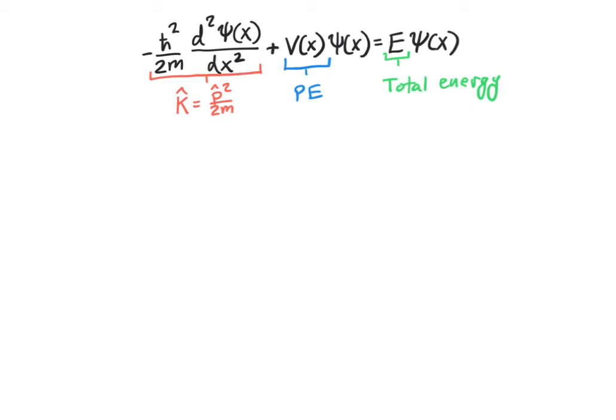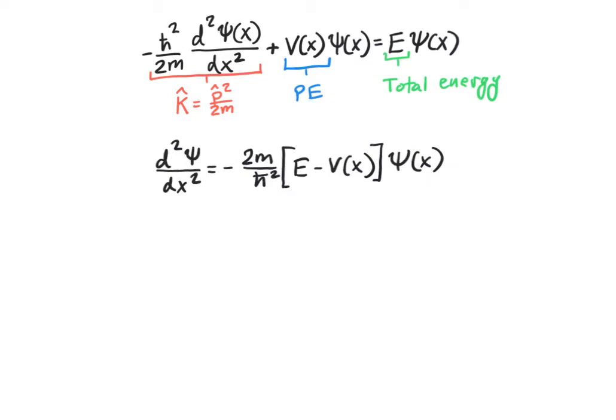Recall that this is an eigenvalue equation. The solutions to this equation are functions such that the left-hand side — basically a combination of operators acting on our function — is simply equal to a number times the original function. The eigenvalue, the number on the right, simply represents the total energy of our state. For qualitative analysis, it's easier to rewrite the Schrödinger equation by moving terms around so that we have the second derivative of the function on the left and a number or function times our wave function on the right.